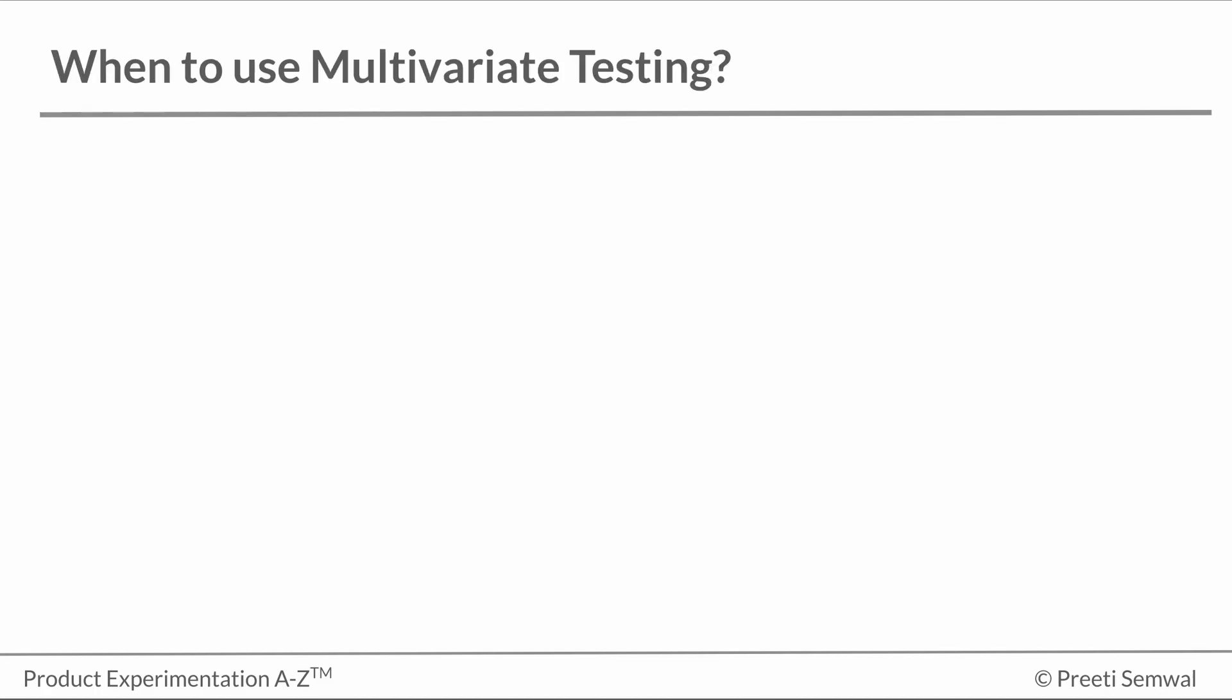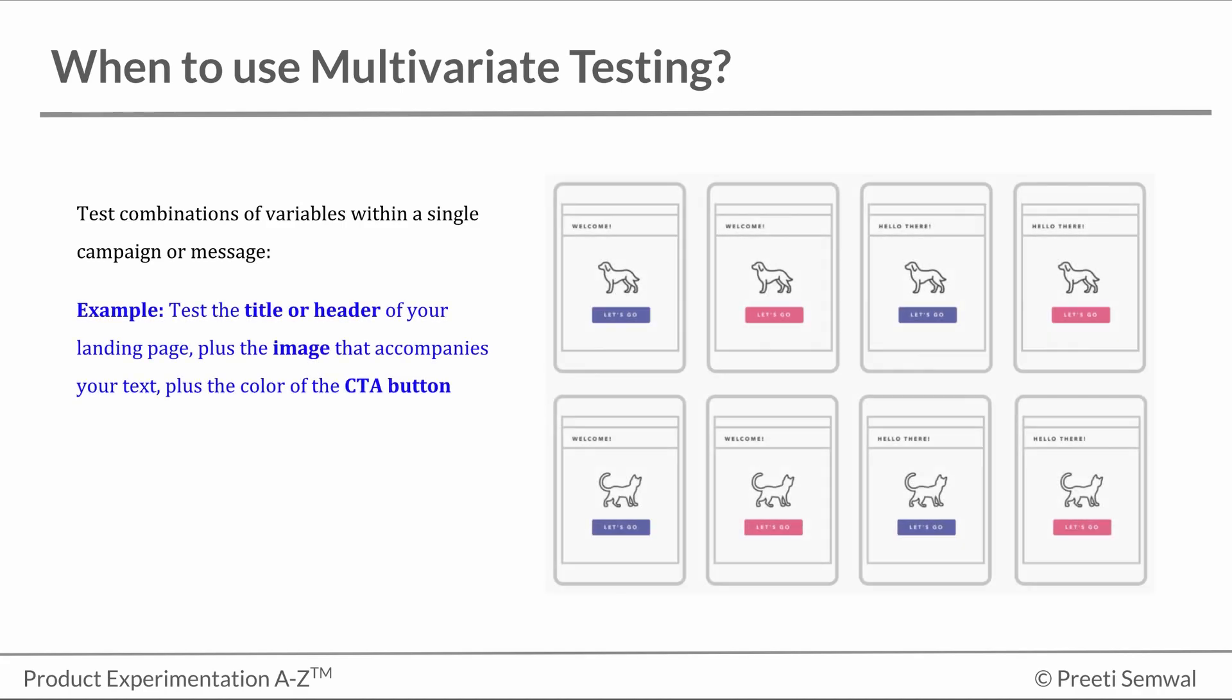So when should we use multivariate testing? The most common example of multivariate testing is a page on which many elements are up for debate. For example, let's say you have a page that includes some kind of catchy header text, an image accompanying your text, and a CTA.